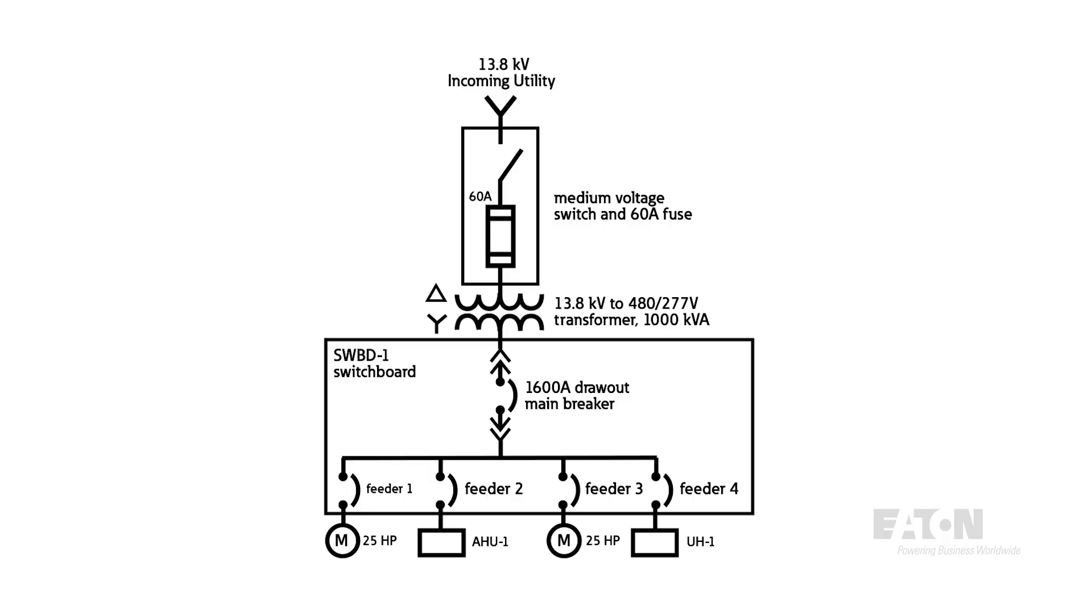Here you can see an incoming 13.8 kV utility feed labeled incoming utility. This incoming utility feed is connected to a medium voltage switch that includes a disconnect switch and 60 amp fuse. The load side of the fuse is then connected to the primary side of a 13.8 kV to 480/277 volt transformer with rating of 1000 kVA. Next, the secondary side of the 1000 kVA transformer feeds a 1600 amp draw out main breaker and a variety of fixed mounted feeder breakers, each serving a load.